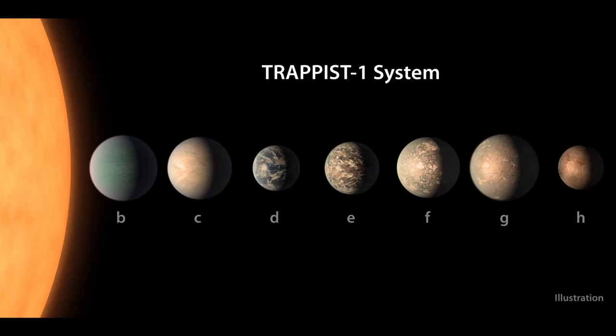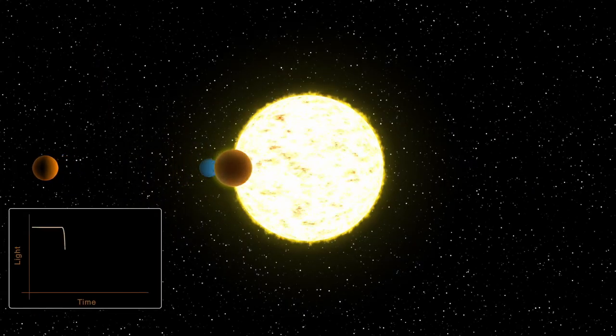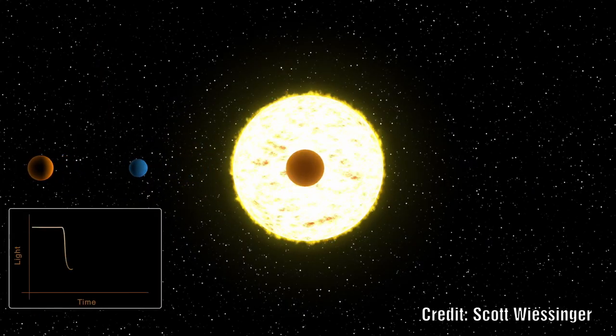This does, however, leave the question about why there would be more giant Earths around these types of stars compared to the more stressed stars. Again here we need to be cautious, as the only way that they can tell the difference between a sub-Neptune class world and a super-Earth is the effect it has on the star in terms of the dimming of the light.